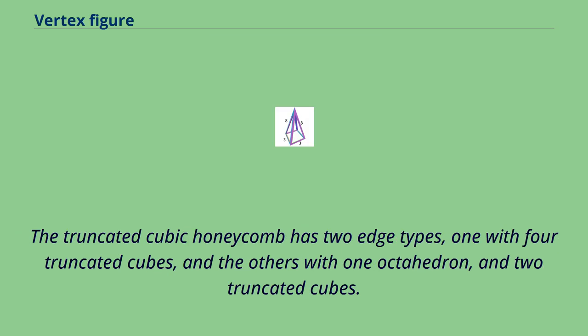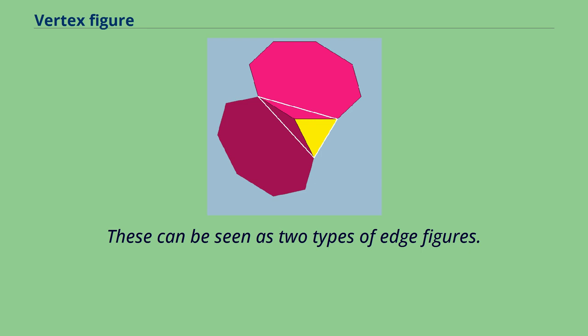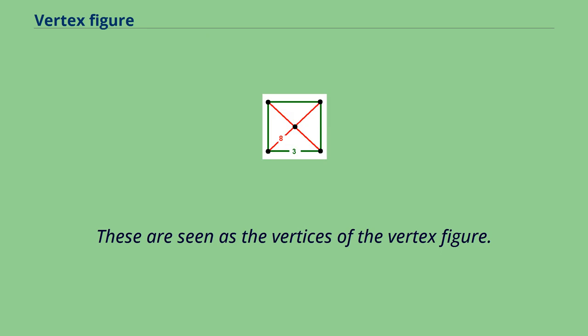The truncated cubic honeycomb has two edge types: one with four truncated cubes, and the others with one octahedron and two truncated cubes. These can be seen as two types of edge figures, which are seen as the vertices of the vertex figure.